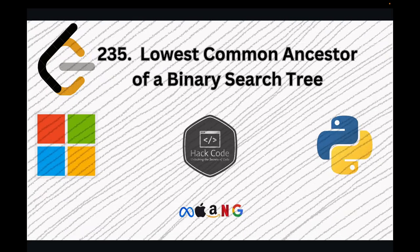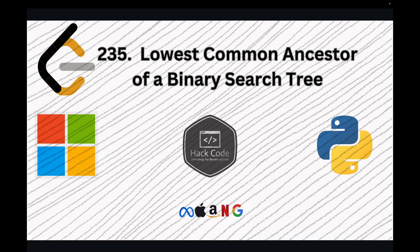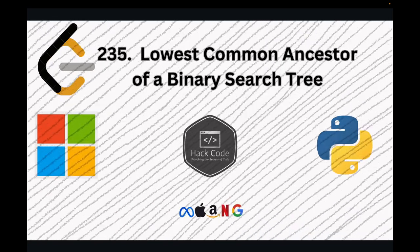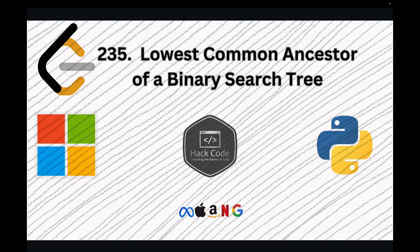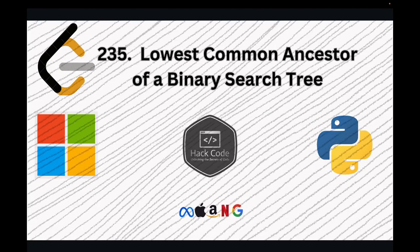Welcome back to HackCode. In this video, we will dive into the relationship concept in binary search trees — finding the lowest common ancestor. We will explore two different approaches to solve this problem: first, a recursive approach, and then an iterative approach. This topic is crucial for coding interviews and helps in understanding the structure and properties of BSTs better. Let's dive in.